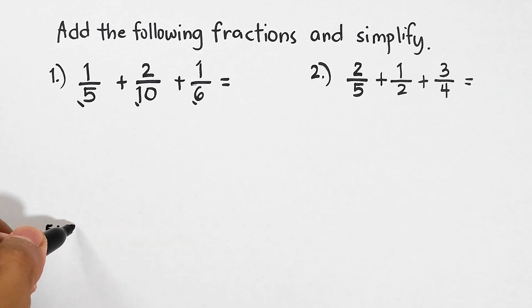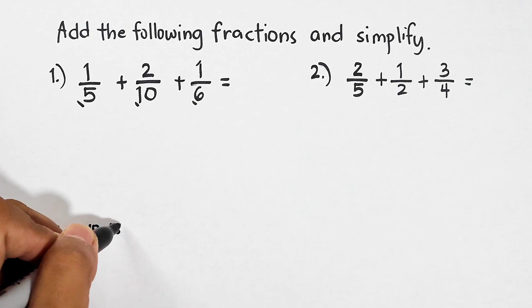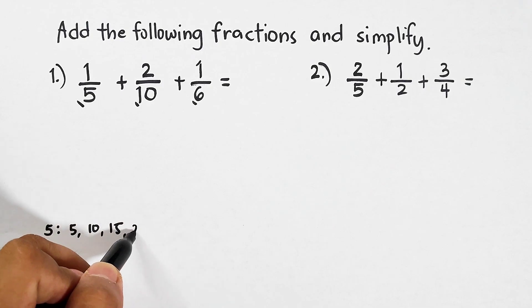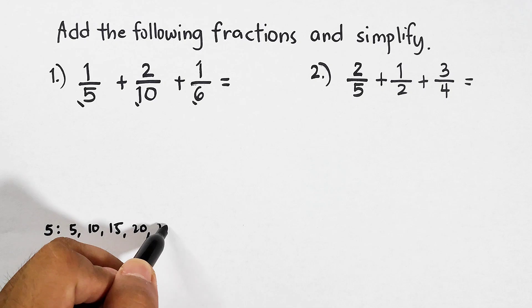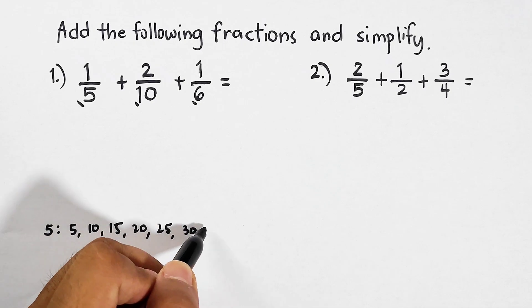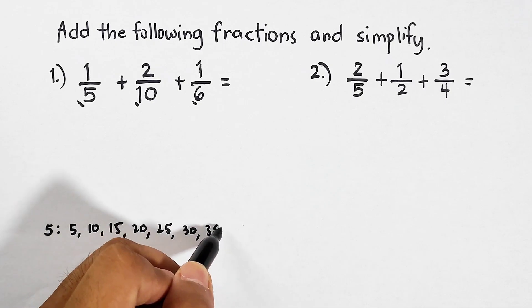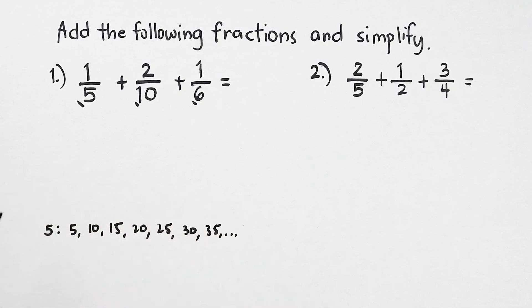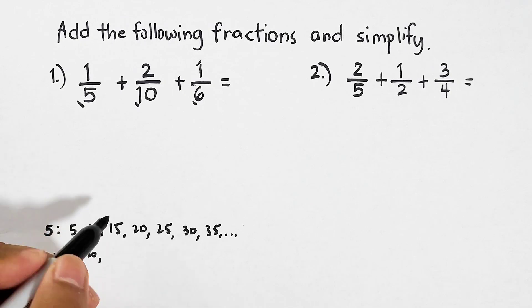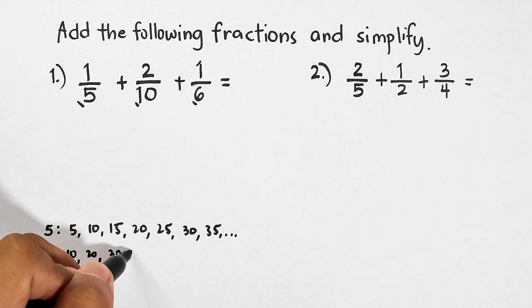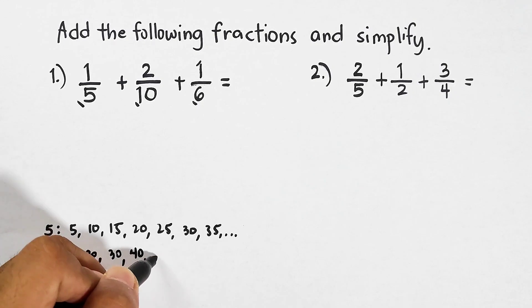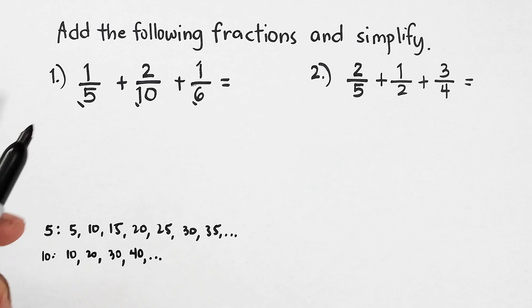5, 10, 15, 20, 25, 30, 35, and so on. Next we have the 10. List down all the multiples of 10: we have 10, 20, 30, 40, and so on. Next, let's list down